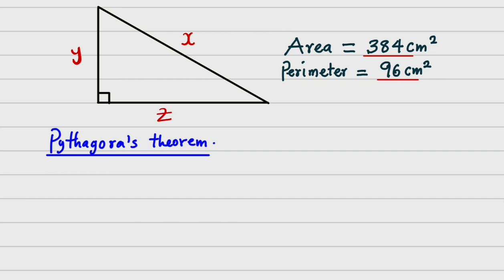From the Pythagorean theorem, the hypotenuse squared — which in this case is x, and we know it is the hypotenuse because it is the side facing the 90 degrees — is equal to the sum of the squares of the two other sides. Let's call this Equation 1.